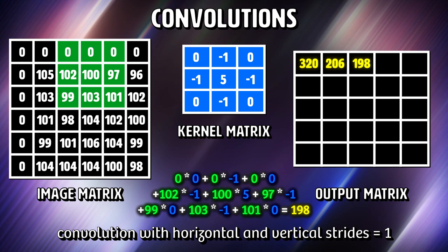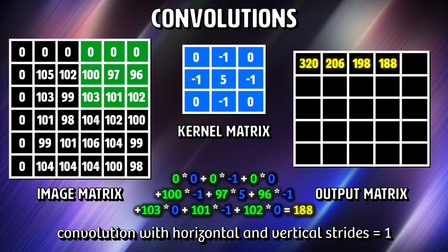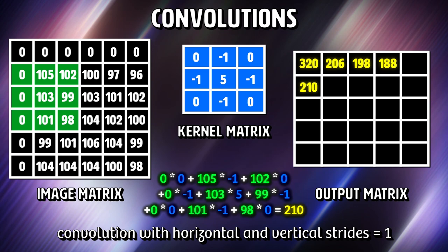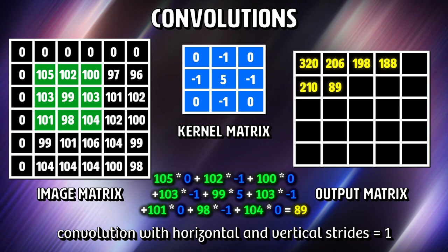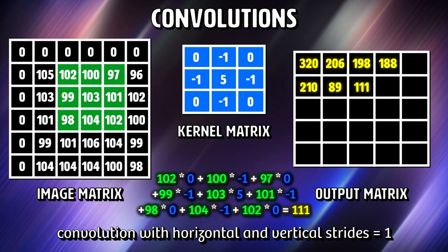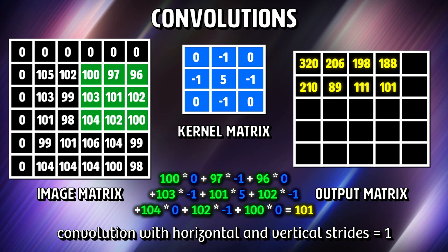Convolutions are one of the main building blocks of convolutional neural networks, the type of network best suited for image processing. The term convolution refers to the mathematical combination of two functions to produce a third function. It merges two sets of information. In the case of a CNN, the convolution is performed on the input data with the use of a filter to then produce a feature map. We execute this convolution by sliding the filter over the input. At every location, a matrix multiplication is performed and sums the results onto the feature map.